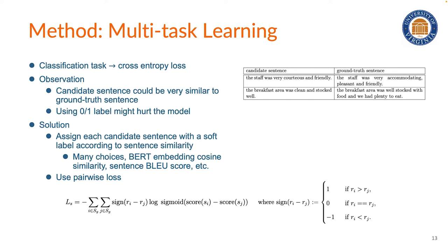Since similar sentences will have nearly the same edge connection with the attribute nodes, and therefore their output node representation after GAT should be very similar. The model will get confused if it is forced to give two very similar embeddings significantly different labels. Therefore, we propose to assign each candidate sentence with a soft label according to its sentence similarity with the ground-truth sentence and then use the pairwise loss.